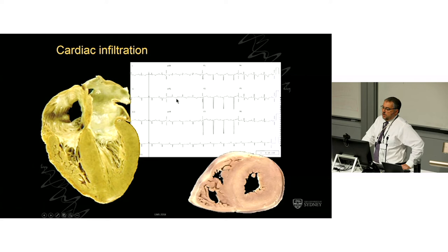These hearts are very, very thick — but for all the thickness, almost no volts on ECG. Because this is not more muscle; it's more thickness, but it has this gelatinous, waxy stuff in between the cells, so it doesn't make for more electrical voltage.